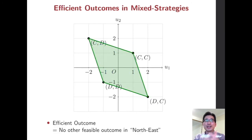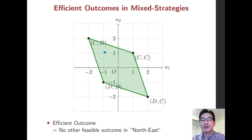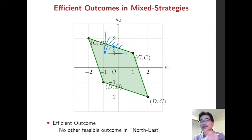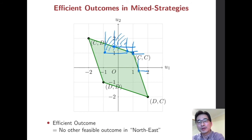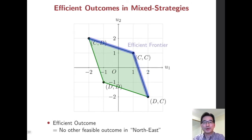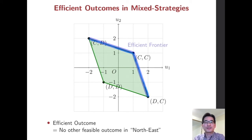This entire area is the set of feasible outcomes when we allow mixed strategies. Which outcomes are now efficient? For instance, some interior points are not efficient because we can find other feasible outcomes in their north-east area. But points along the upper-right boundary are efficient. All the points along this boundary line form the efficient frontier.